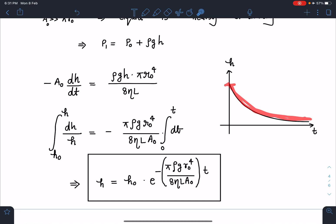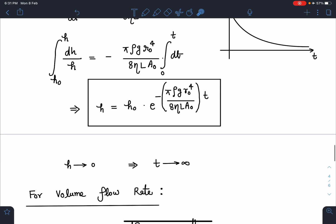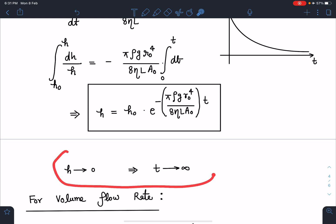So exponentially this h is going to decrease from h₀ to 0, and it's going to take infinite time. That is what I have written here, the answer for the third part. If h is tending to 0, t must be tending to infinity. So it will take a very large time in order to empty the vessel.